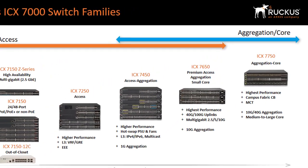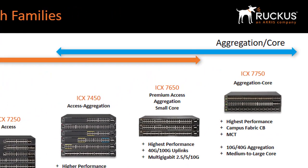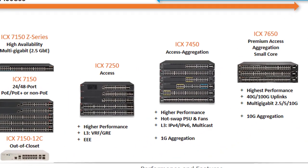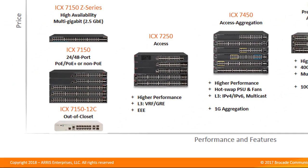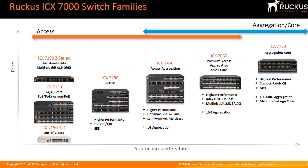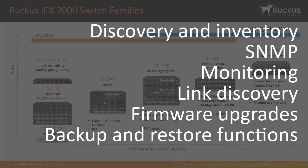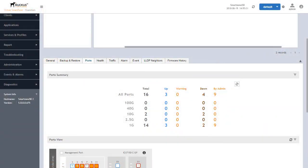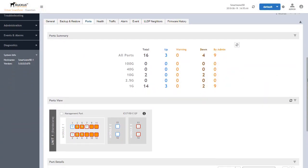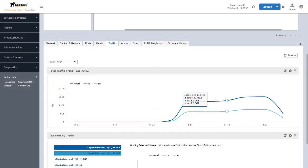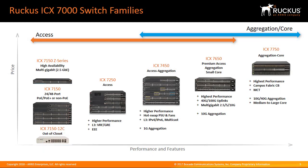SmartZone now has the ability to manage the Ruckus ICX switch family. ICX multipurpose switches can be deployed standalone, stacked, or within a campus fabric. Switch management features within SmartZone include discovery and inventory, SNMP, monitoring, link discovery, firmware upgrades, along with backup and restore functions. Organizations can proactively monitor the network, perform network-wide troubleshooting, generate traffic reports, and gain visibility into network activity from the wireless edge to the core. Ruckus SmartZone centralizes management of the entire family of Ruckus switches and wireless access points with a single, easy-to-deploy management platform.